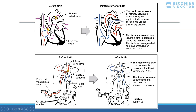The ductus venosus bypasses the liver, and then the inferior vena cava carries deoxygenated blood back to the heart. For most congenital cardiac disease, we're looking at things that go wrong within the heart itself — things like the foramen ovale or the ductus arteriosus — and we'll move on to some of those conditions now.